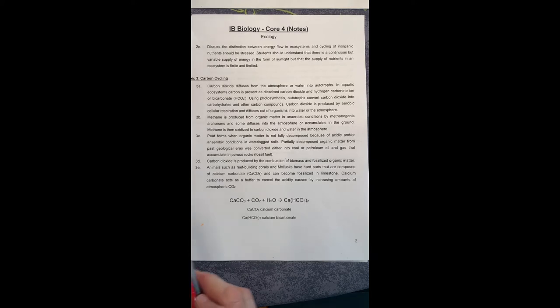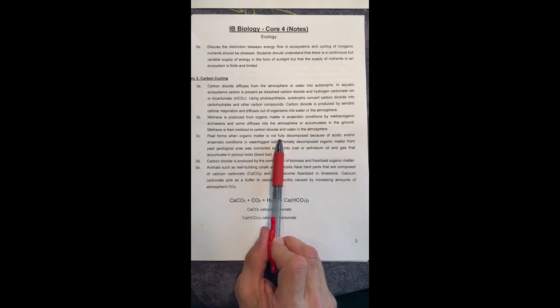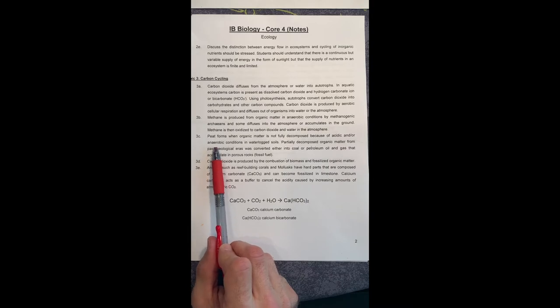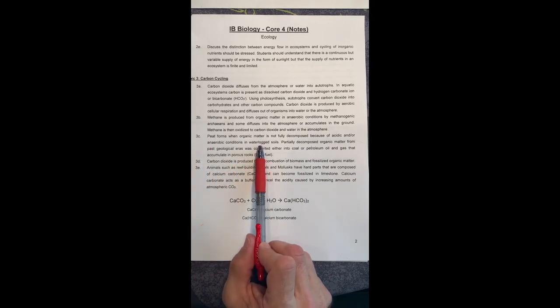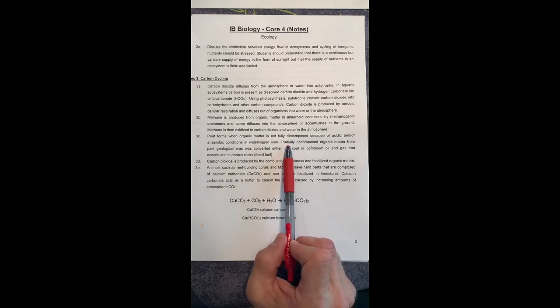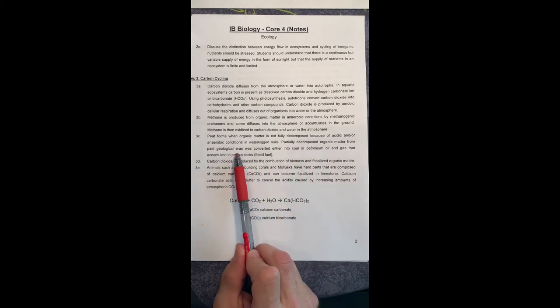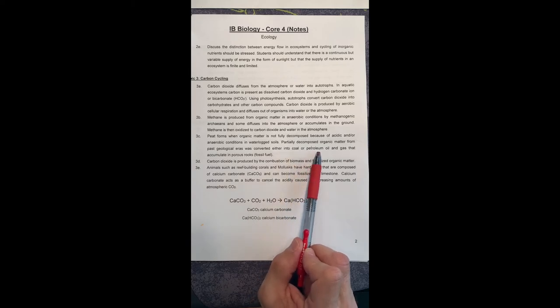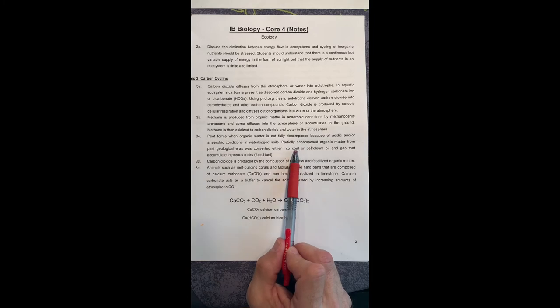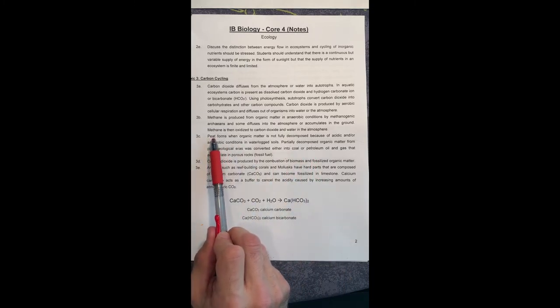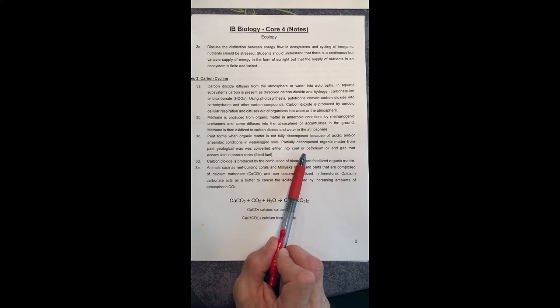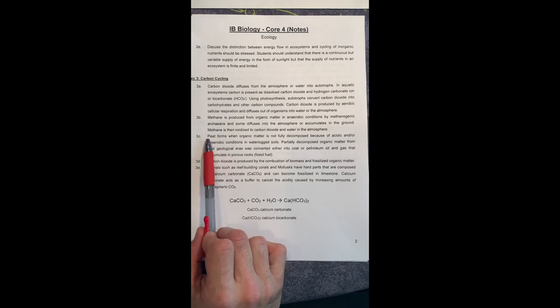So question 3C. Question 3C says peat or peat moss. Peat forms when organic matter is not fully decomposed because of acidic or anaerobic conditions without the presence of oxygen in waterlogged soils, things like marshes and bogs, swamps, which of course we don't see a lot in California and Mexico. Partially decomposed organic matter from past geological eras was converted either into coal or petroleum oil. See, when we're talking about peat, you're like, who cares? The coal industry cares, the petroleum industry cares.